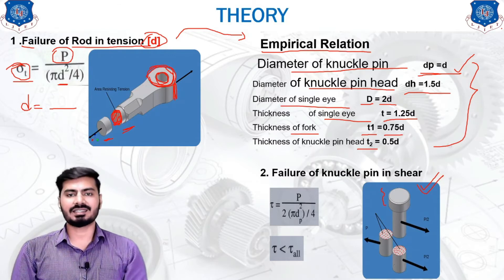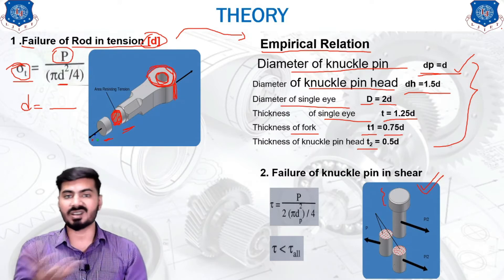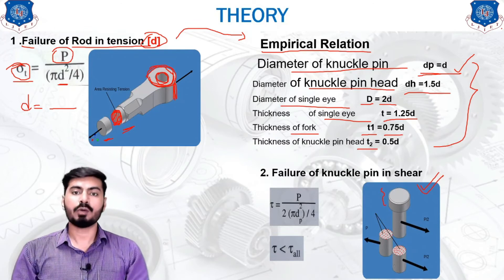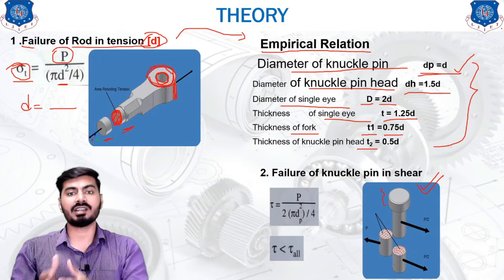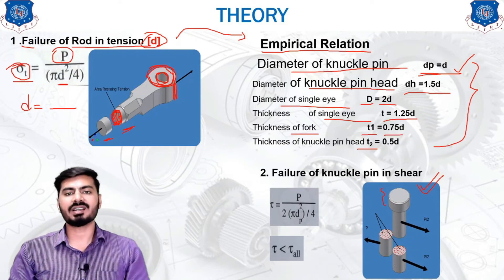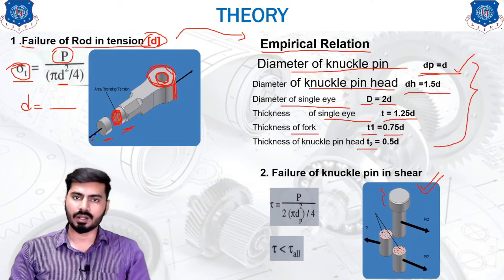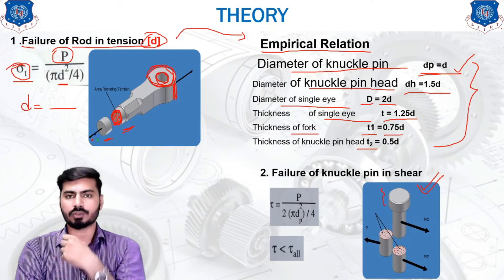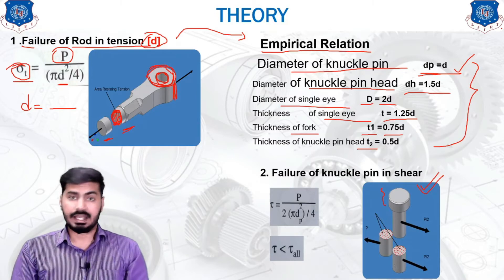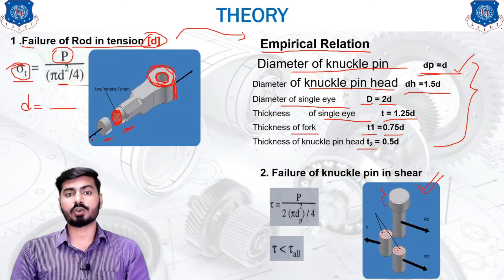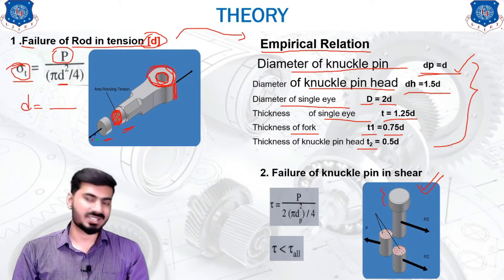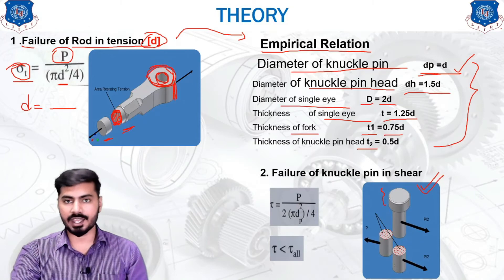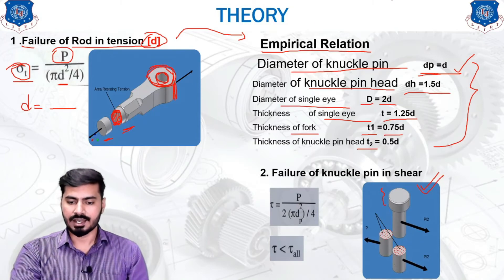Since this design is carried out using assumptions, you will have to check whether your design is safe in working conditions or not. The parameters of the working conditions will be provided in your example, and you will have to check whether your joint is safe under those working conditions. The first step to check those dimensions is the failure of the knuckle pin in shear.